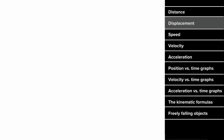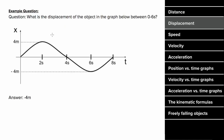What does an example problem for displacement look like? If you were given this graph and asked to find the displacement of the object between zero and six seconds, you wouldn't care that the object moved forward and backward and changed directions. All that you would focus on is that the initial position was zero, the final position at six seconds was negative four, so the displacement was negative four meters, since you ended four meters behind where you started.